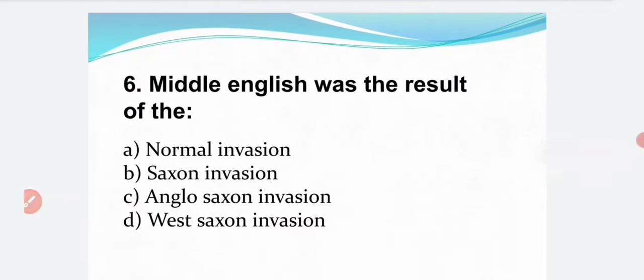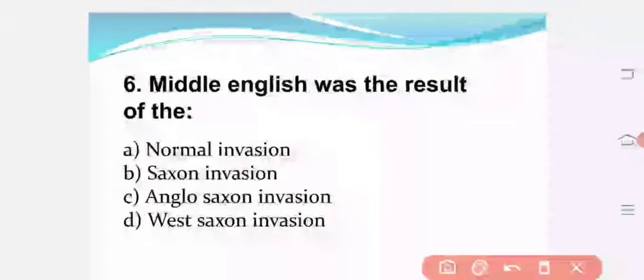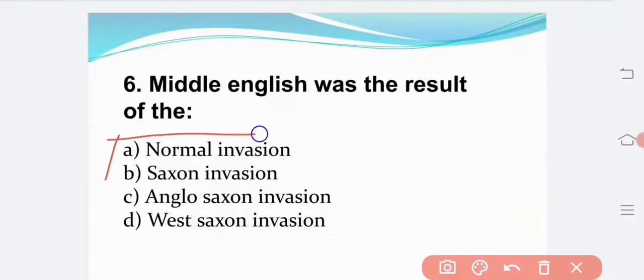Next bit. Middle English was the result of the following. Option A — Norman invasion. Option B — Saxon invasion. Option C — Anglo-Saxon invasion. Option D — West Saxon invasion. The correct answer is Option A: Norman invasion.